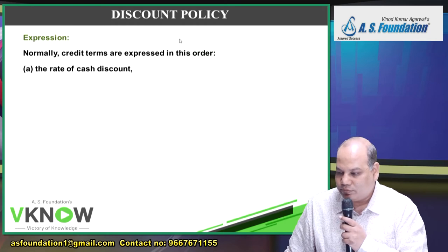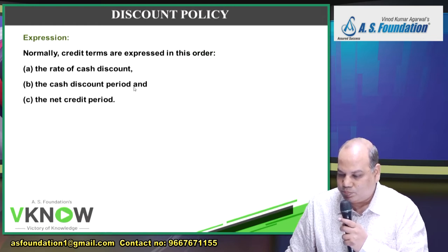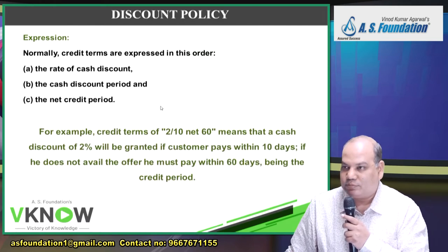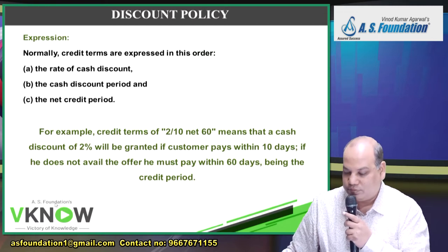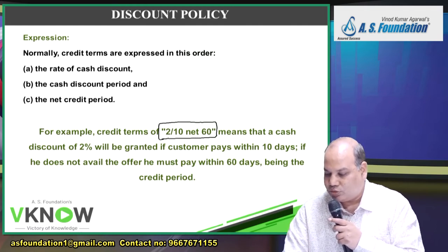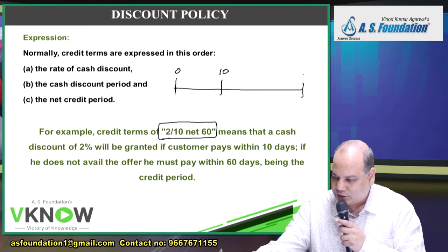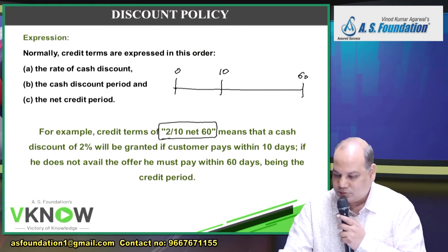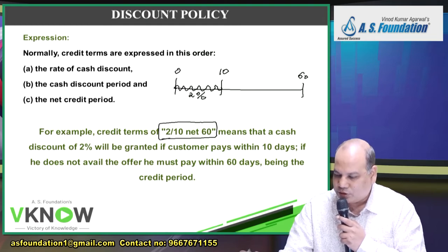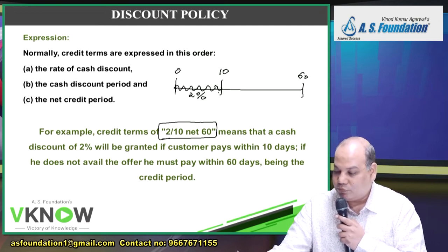Cash discount policy is explained to the customer through credit terms stated as: rate of cash discount, cash discount period, and net credit period. For example, credit terms stated as '2/10 Net 60' mean: if you pay between 0 to 10 days, you will get a 2% cash discount.